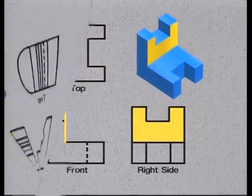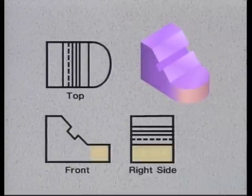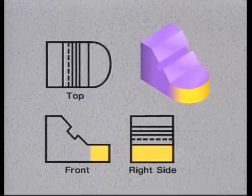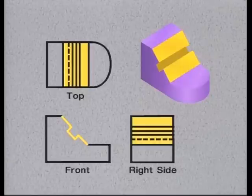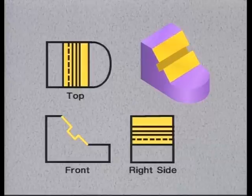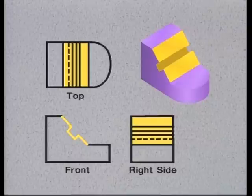Notice that the curved surface appears flat in the front and right side views, and that the inclined surface appears foreshortened in the top and right side views. Because an orthographic view has only two dimensions — height and width — curved and inclined surfaces will appear distorted in some views. That's why it's important to look at all the views in order to understand the true shape and size of a part.